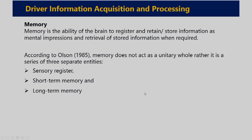For understanding human information processing, we should also know about memory. Memory is the ability of the human brain to register, retain, and store information as a mental impression and retrieve that stored information whenever it is required. According to Olson (1985), memory does not act as a unitary whole; rather, it is a series of three separate entities: sensory register, short-term memory, and long-term memory.